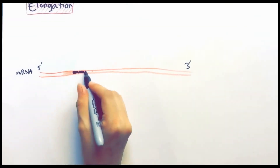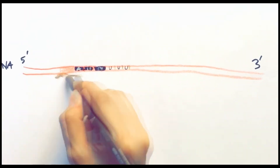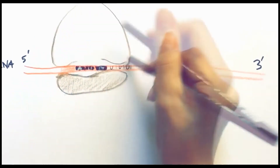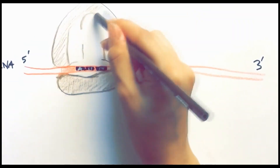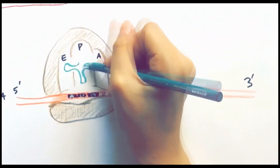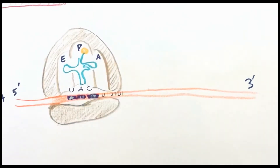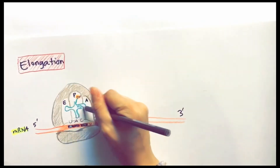During elongation, there are three sites in the ribosome where elongation takes place. The A-site is the entry for the new tRNA charged with an amino acid, or aminoacyl tRNA. The P-site contains the peptidyl tRNA, the tRNA that carries the growing polypeptide chain. And the E-site is where the uncharged tRNA exits.